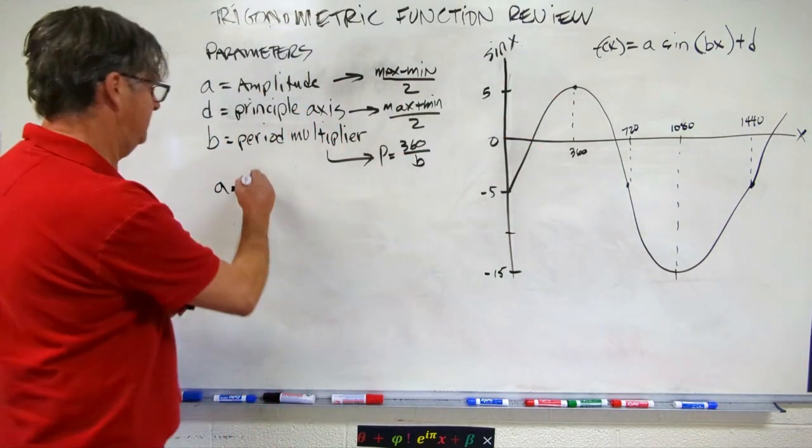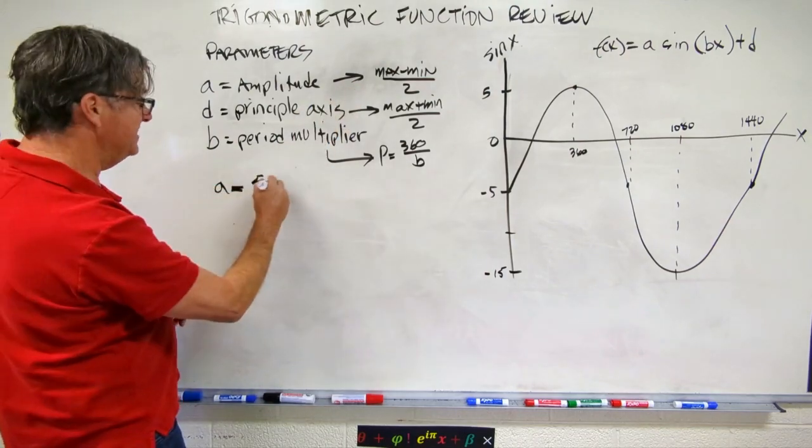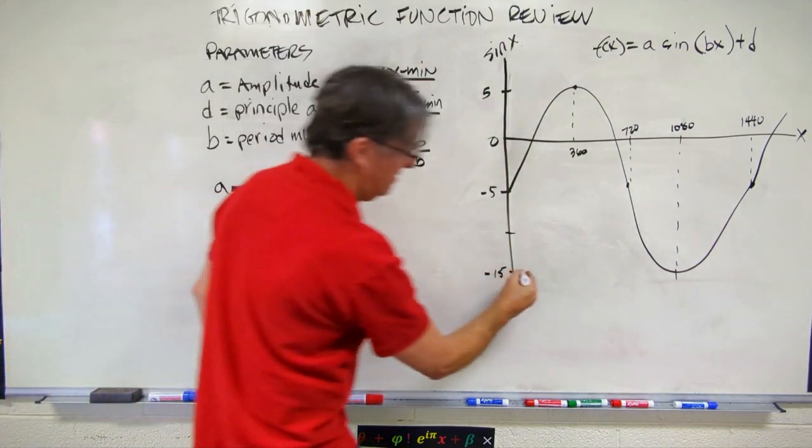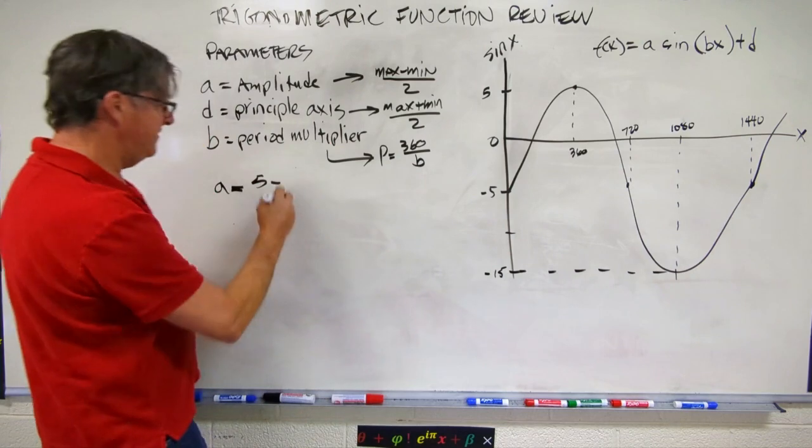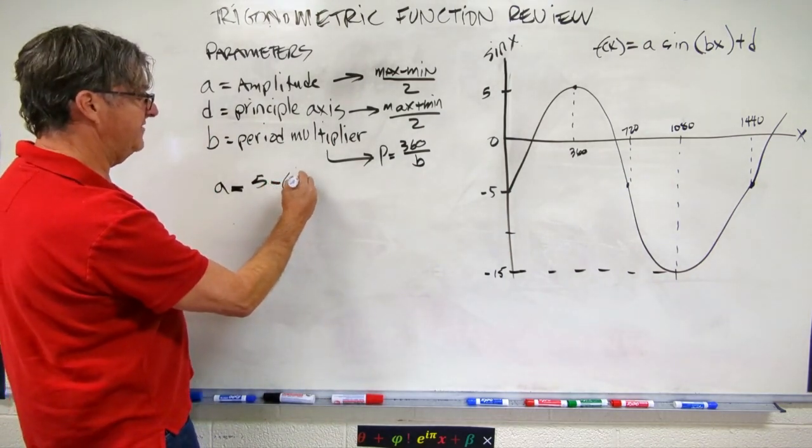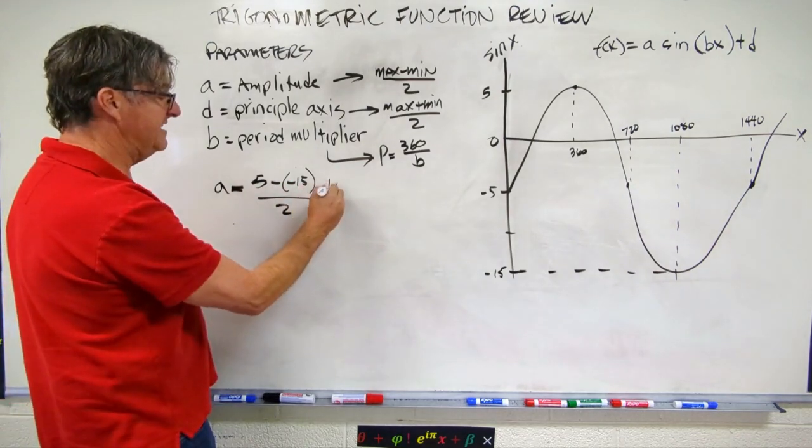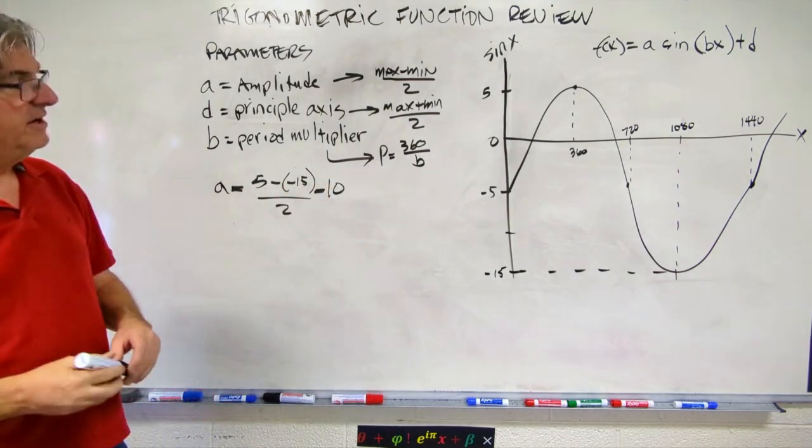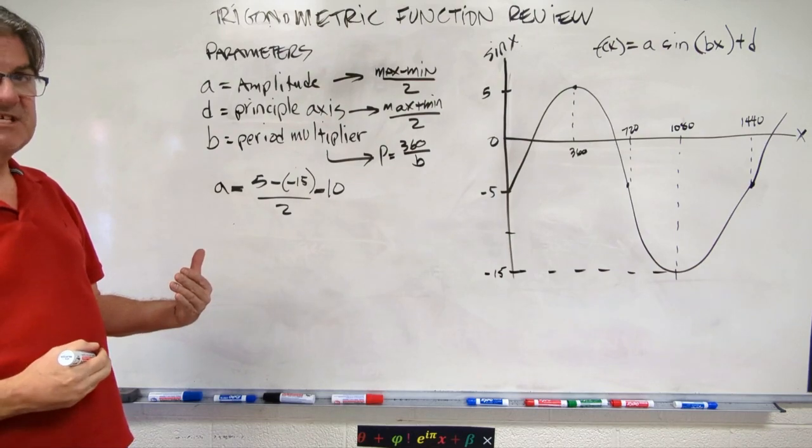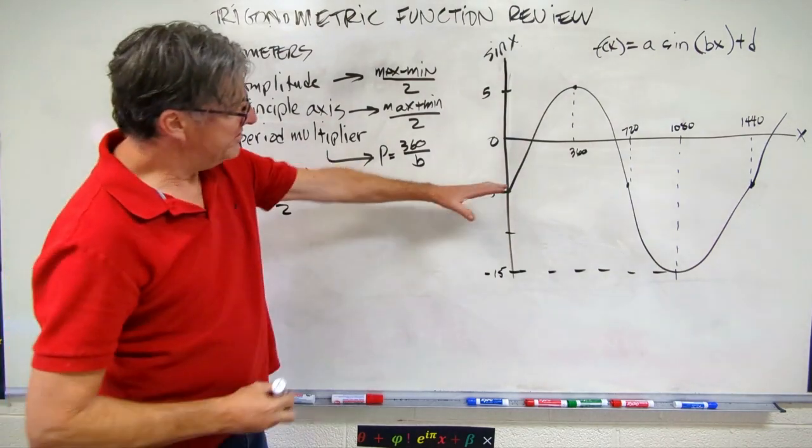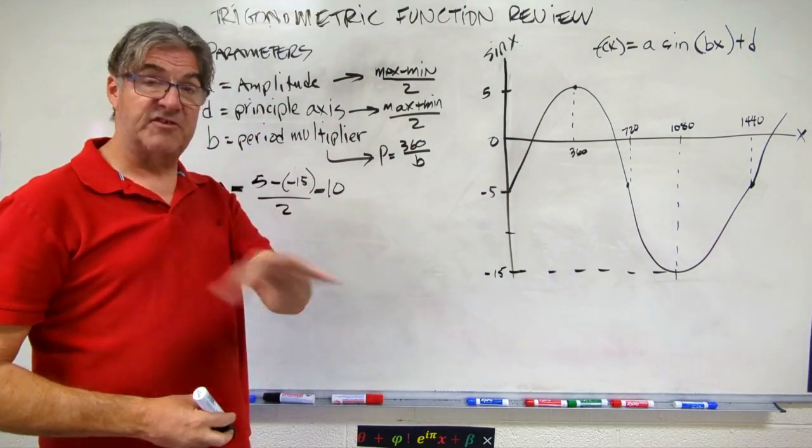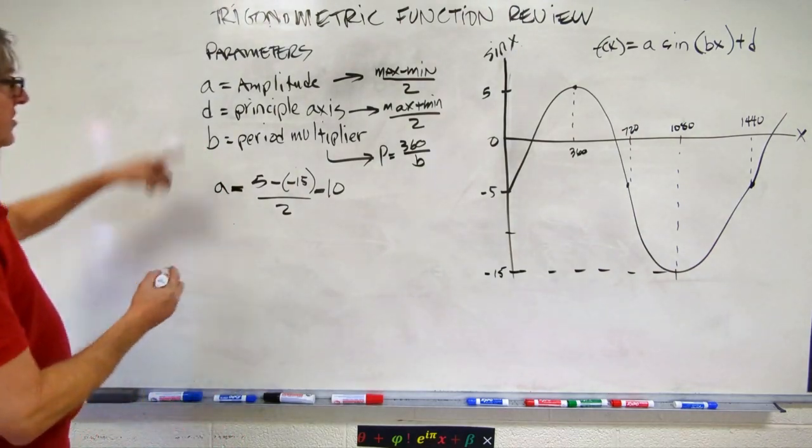So a is going to be the max, which is 5, minus the min, which is negative 15. So that's minus minus 15 over 2. That's going to be 20 over 2, or 10. So let's check this out. That means that the amplitude has to be 10. So here's our principal... actually, let's do the principal axis first, and then we can check all of it.